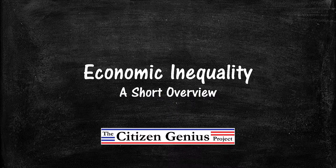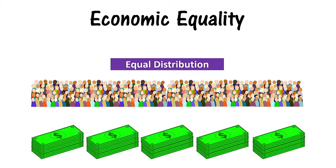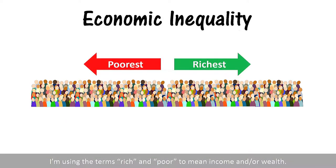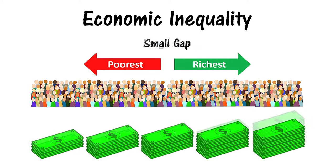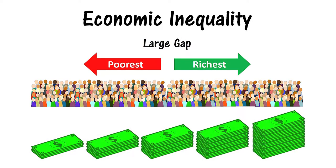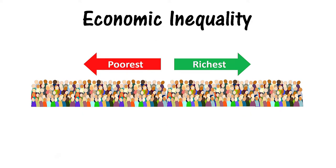A short overview of economic inequality, explained by the Citizen Genius Project. Instead of there being a perfectly equal distribution, economic inequality means there is a gap between the rich and poor — whether that means there is a small gap or a large gap. This video will focus on economic inequality in terms of income and wealth, but economic inequality could also refer to other ways of measuring the economy.